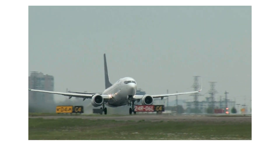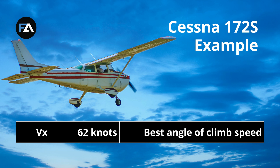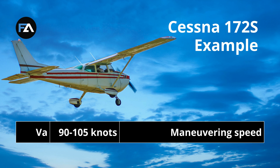Let's talk about a few key V-speeds every pilot should know. V-X is the best angle of climb speed. You'll use it when you need the most altitude over the shortest distance, like clearing obstacles during takeoff. V-Y is your best rate of climb speed, giving you the most altitude in the shortest time. V-A is your maneuvering speed, and it's important for turbulence or sudden control movements.